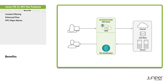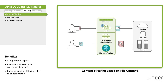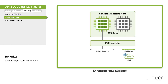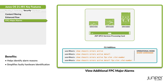New key features on the security side include configuring a UTM policy for content filtering to determine the file type based on content instead of file extensions. Use enhanced flow support to improve the total throughput capability of a single session. Use these show commands to see more details about FPC major alarms on the JNP SPC3 services processing card.